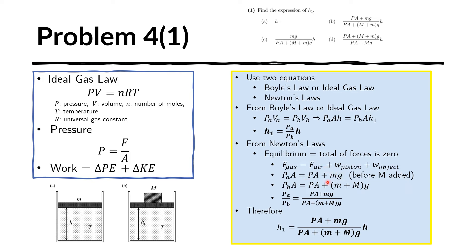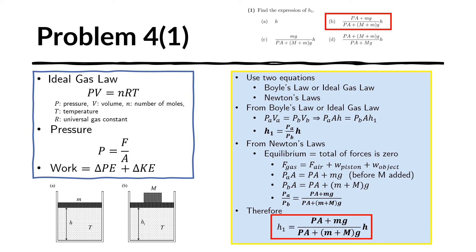We now substitute the ratio P sub A over P sub B back into our expression for H sub 1, and we obtain the final expression for H sub 1.